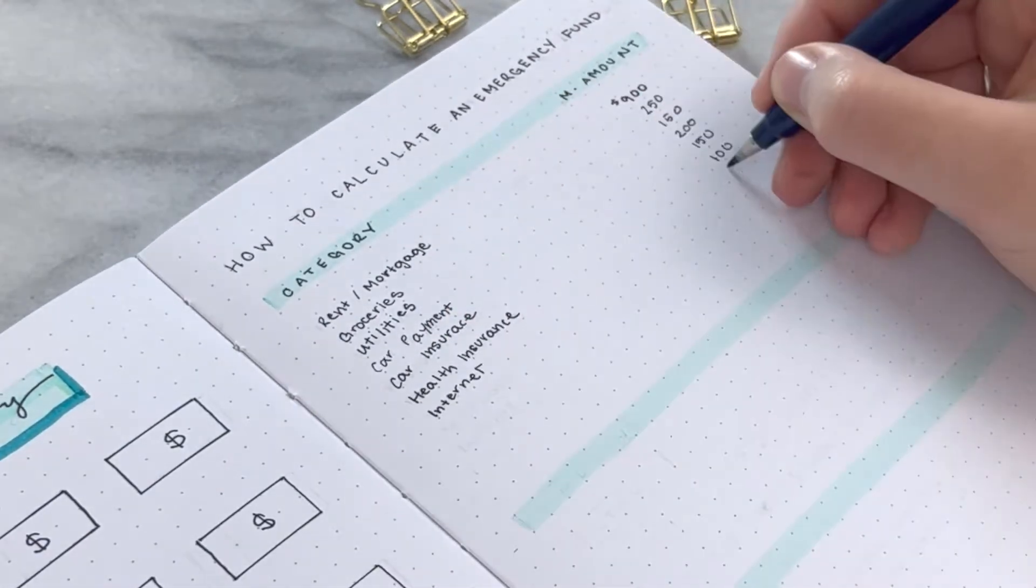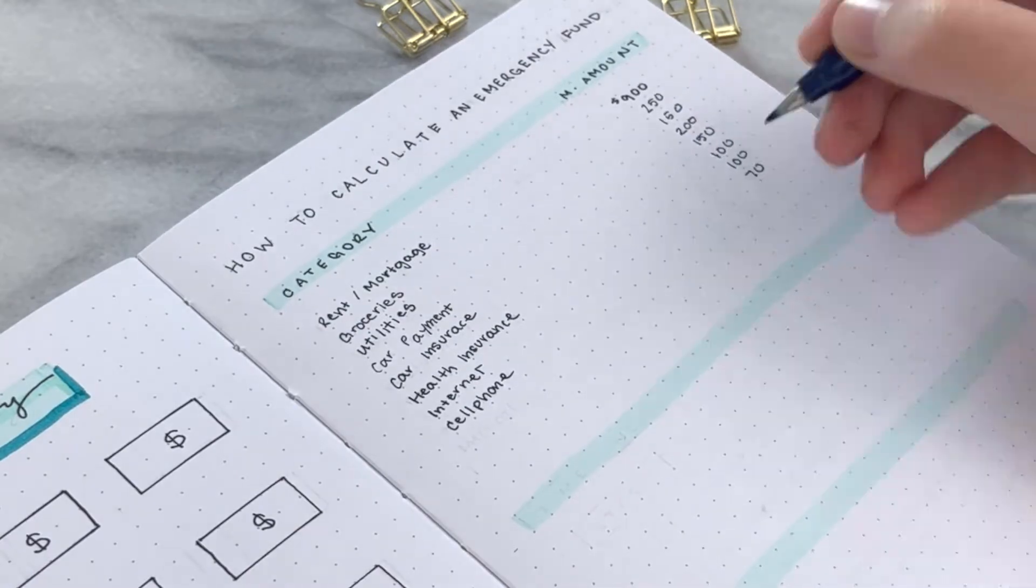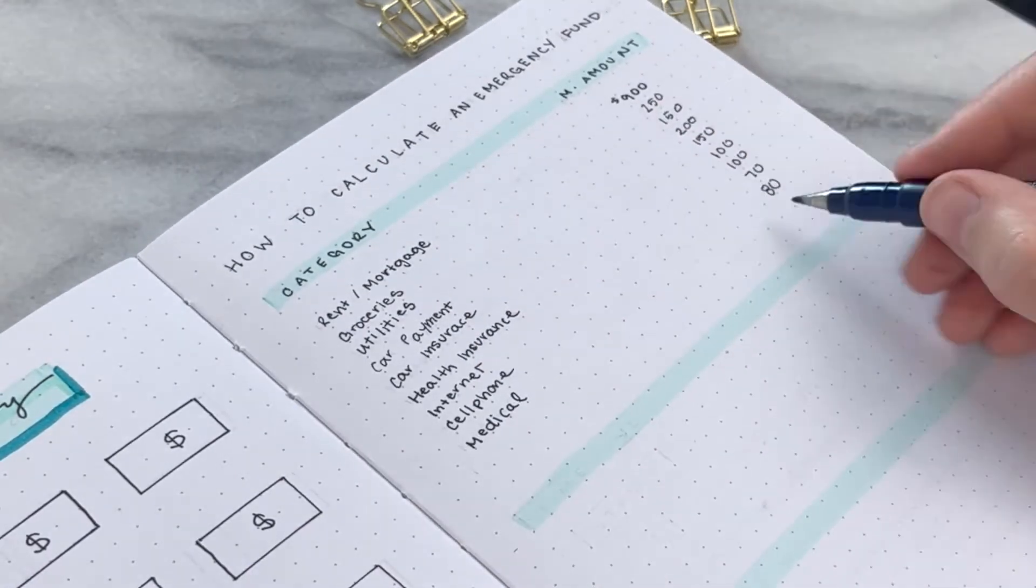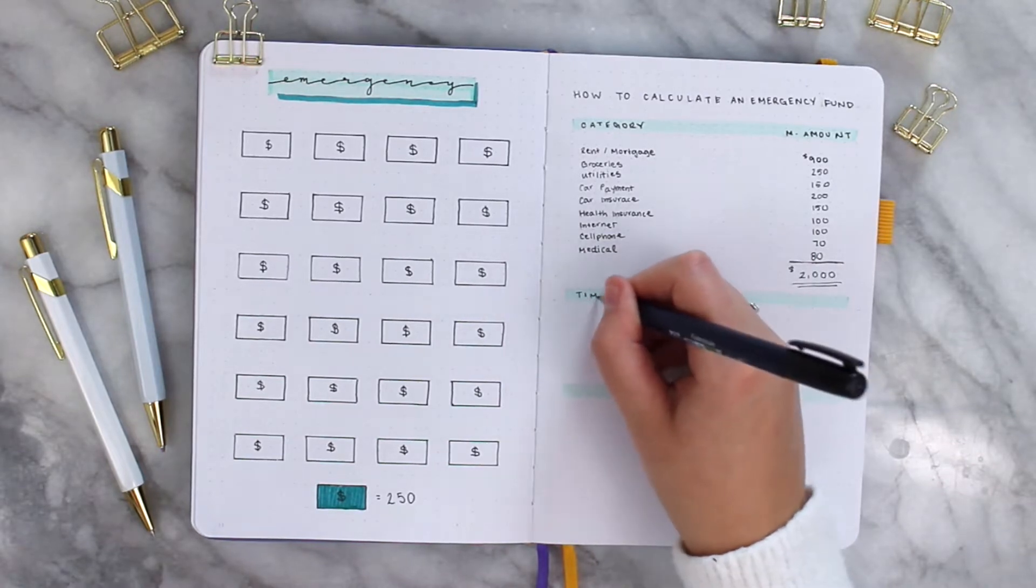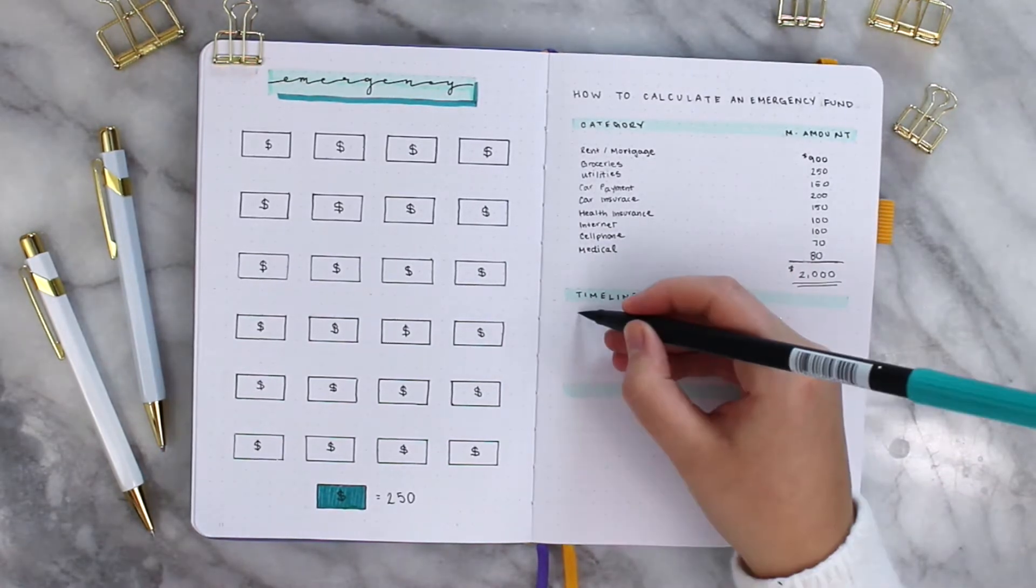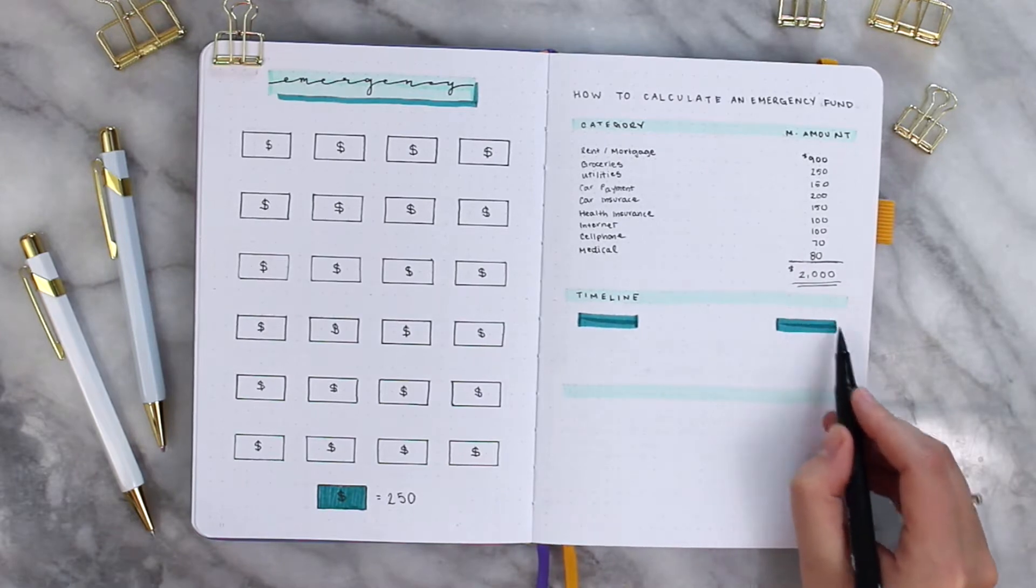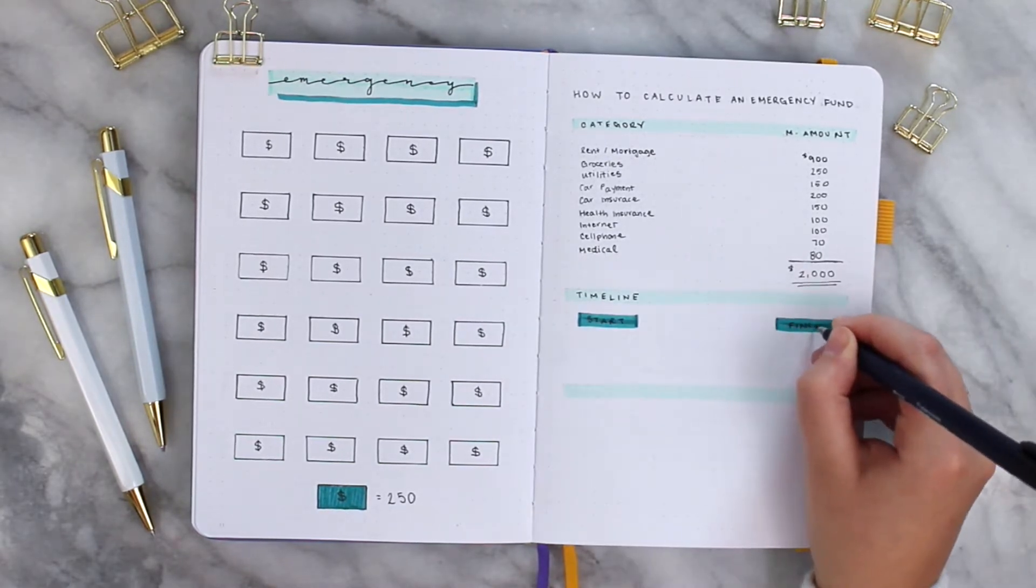Things like rent or mortgage expense, groceries, utilities, car payments, car insurance, health insurance, maybe you need internet for your kids to go to school, that would be something that would be on this list. Cell phone, medical, it will depend on who you are and your stage in life.